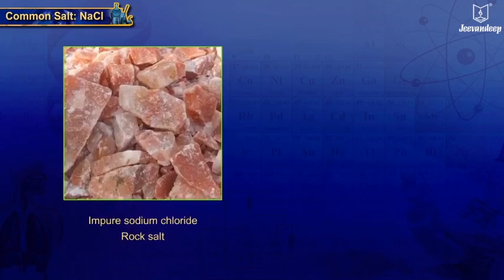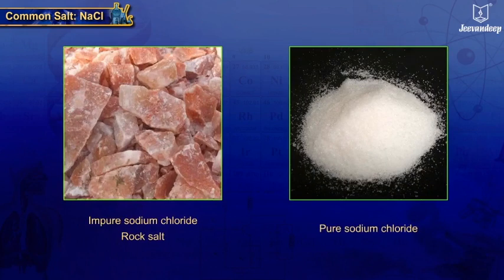Impure sodium chloride is brown in color, called rock salt, while purified form is colorless, crystalline ionic compound.